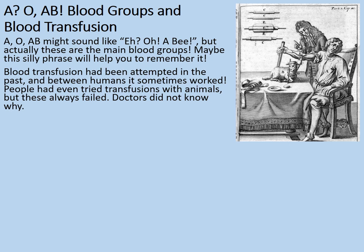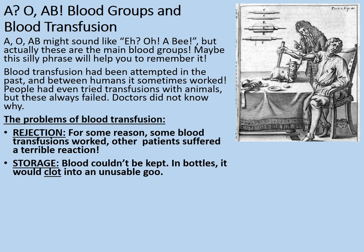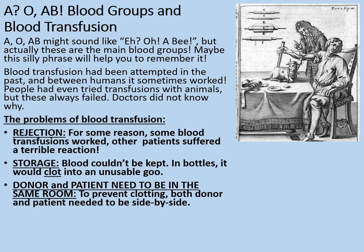The problems of blood transfusion are threefold. Firstly, rejection — for some reason some blood transfusions worked while other patients suffered a terrible reaction. Secondly, storage — blood couldn't be kept; in bottles it would clot into an unusable goo. And also, the donor and patient needed to be in the same room — to prevent clotting, both donor and patient needed to be side by side and the transfusion had to happen all at once.